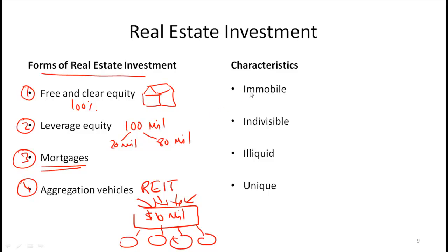In terms of general characteristics of real estate investment, this is somewhat of a generalization, but it is something you need to know. Obviously, real estate investments tend to be immobile. So when you buy a house or some other form of real estate investment, it stays where it is. It is generally indivisible. So if you bought a house, you cannot sell half the house.